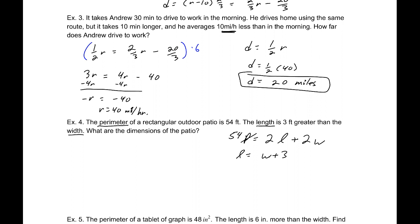Let's substitute that into the first equation, replacing L. 54 equals 2 times W plus 3 plus 2W. Distributing that, we get 2W plus 6 plus 2W. Combining those, 4W plus 6 equals 54. Subtracting 6, 48 equals 4W, which makes W equal 12 feet. So our width is 12 feet. We know that the length is 3 more than that, so it is 15 feet.